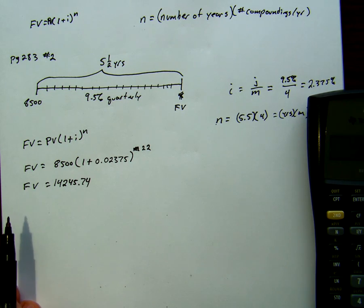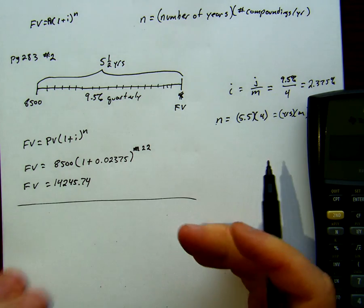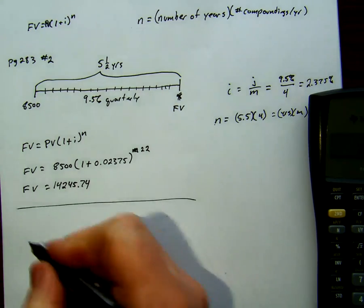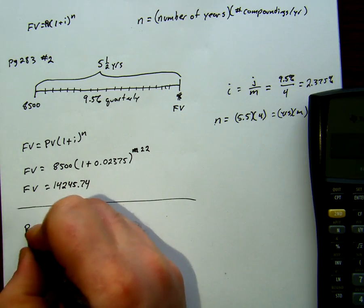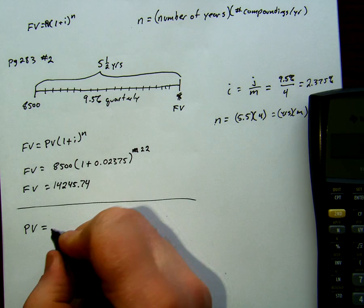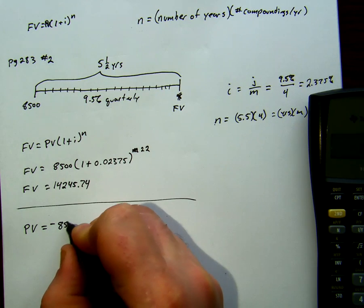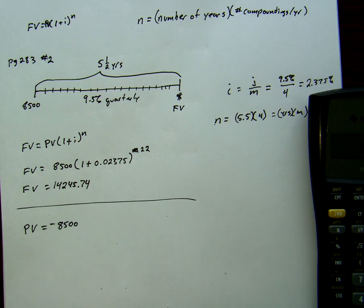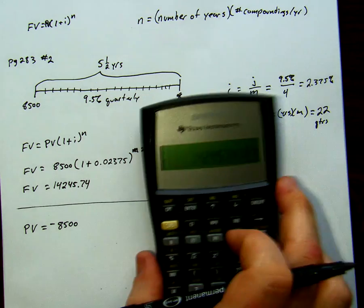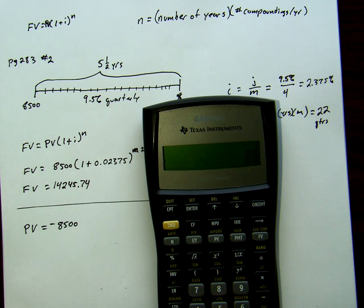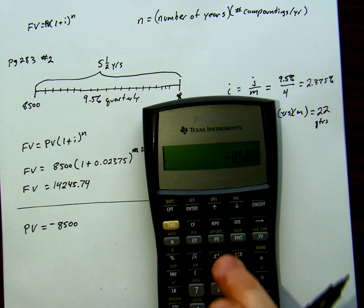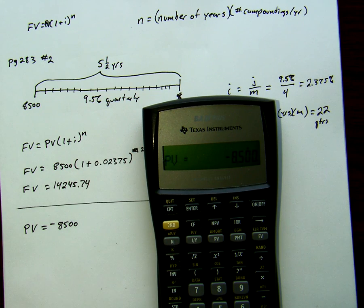Because we're investing this value, we're going to say our present value is equal to negative 8,500. We put in a negative value because we'd have to pay 8,500 dollars to get some value later. So in our calculator, we're going to say 8,500 negative and store that in as a present value.